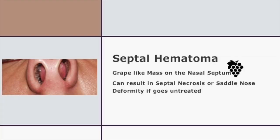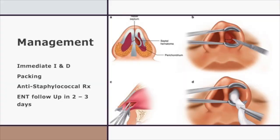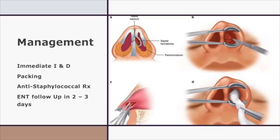Let us look at two similar conditions managed similarly. First, septal hematoma: these patients come with an injury to the nose, and on examination of the nasal cavity you might see grape-like swelling, either unilateral or bilateral. Once identified, you need to drain it — blood accumulates between the perichondrium and the avascular cartilage, and if not drained the cartilage will undergo necrosis and collapse, giving rise to saddle nose deformity. Perform incision and drainage, pack the nose, prescribe anti-staphylococcal antibiotics, and arrange ENT follow-up within 24 to 48 hours.